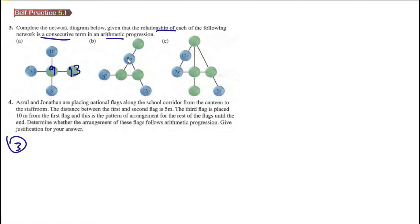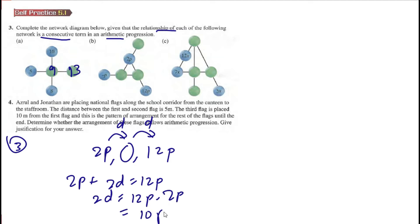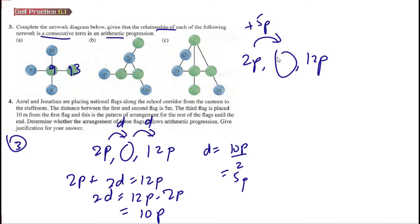In this box we should find the arithmetic sequence. We have 2p, a box, and 12p. These gaps are both d, so 2p plus 2d equals 12p, which gives 2d equals 10p, so d equals 5p. Therefore 2p plus 5p equals 7p, so the box is 7p.